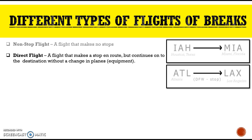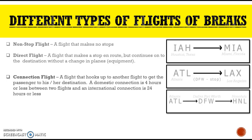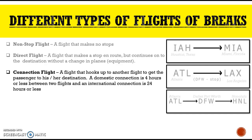For example, a flight from Atlanta stopping in Dallas-Fort Worth continues on to Los Angeles — the passenger does not change planes. Connecting flight: for example, Atlanta to Dallas-Fort Worth going to Honolulu. This is a flight that hooks up to another flight to get the passenger to his or her destination.